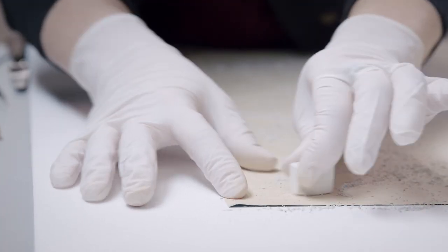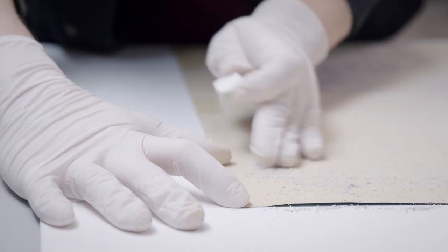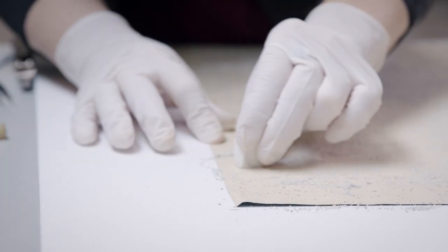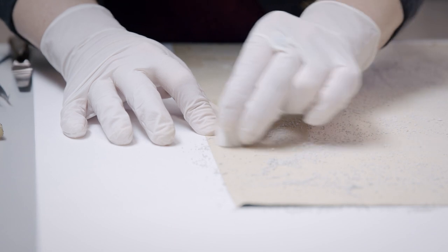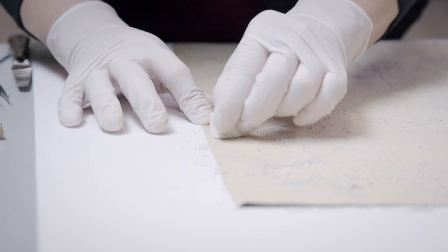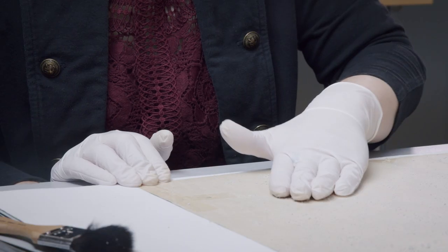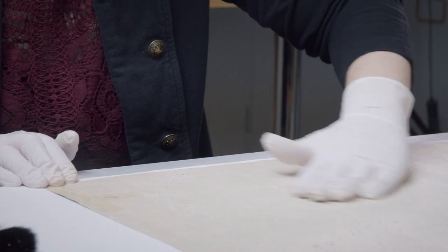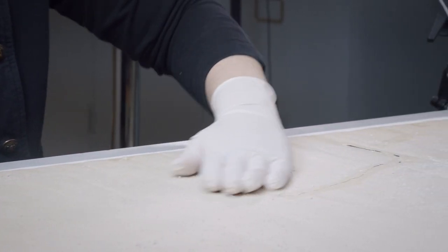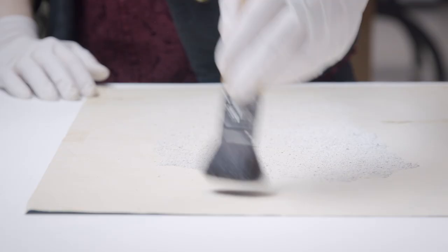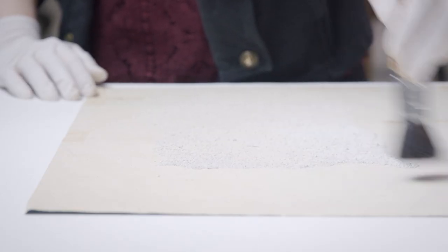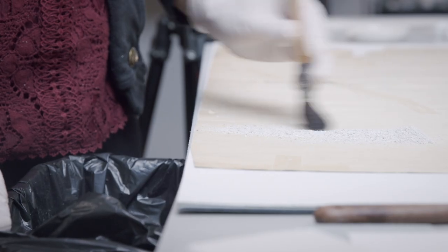I used a block eraser to carefully clean the edges of the tears, where the small eraser crumbs could become trapped or cause more damage. I carefully brushed away all of the eraser crumbs using a soft brush.